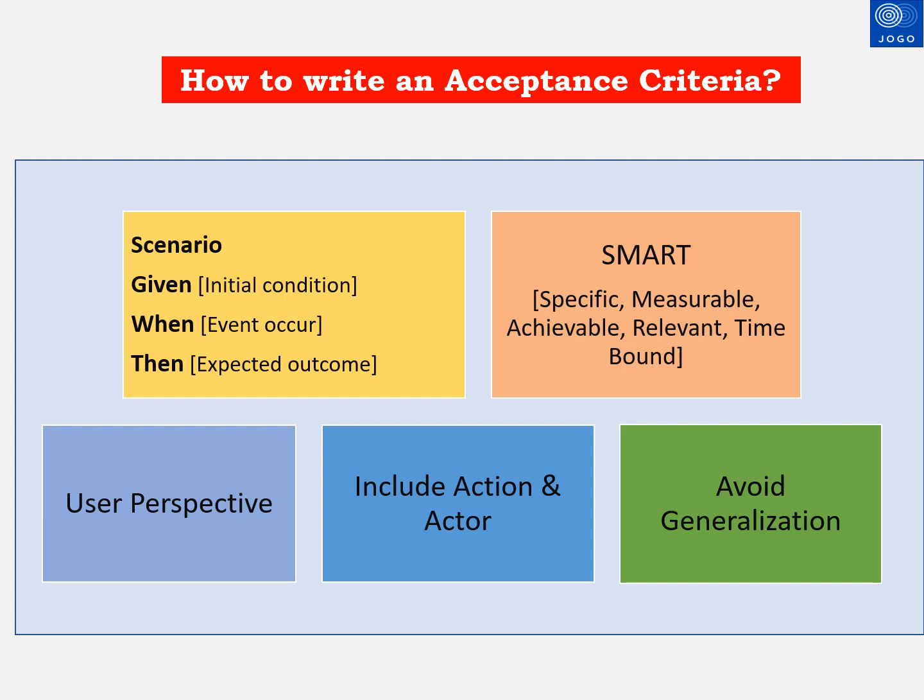The second condition to consider when writing good acceptance criteria is the SMART technique. We need to consider all five elements: S means specific area of product improvement, M means measurable outcome, A means actionable and achievable result, R means relevant, and T means time-bound — that is, the acceptance criteria should have a specific event with a timeline. The user perspective and type of user also need to be captured.